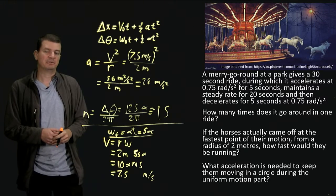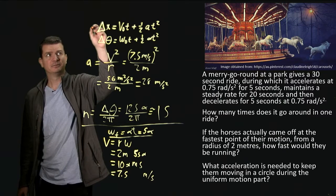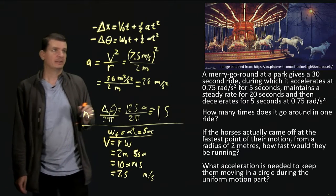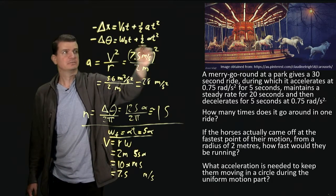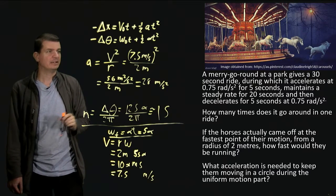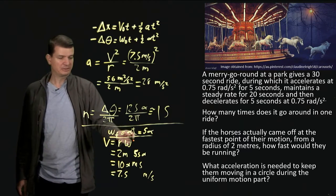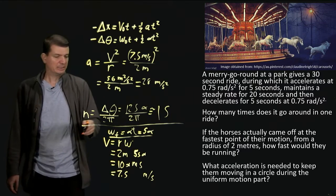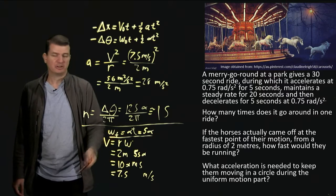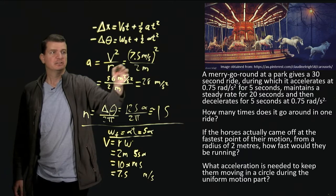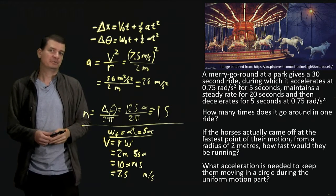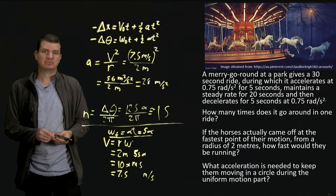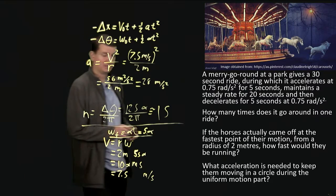To sum up, the key ideas used here were the mapping between linear and rotational quantities: x→θ, v→ω, a→α, so constant angular acceleration gives you the rotational kinematic equations. We also used the tangential velocity v equals r times omega to convert angular to linear speed. And finally, we used the centripetal acceleration formula a equals v squared over r for uniform circular motion. Hopefully this has cleared up some questions about rotational kinematics.